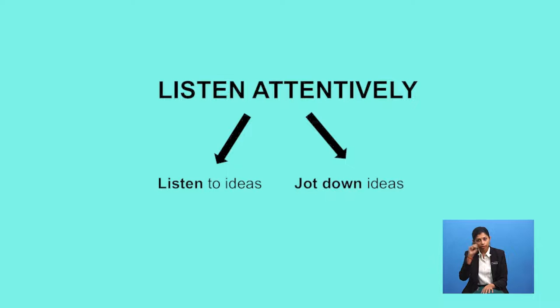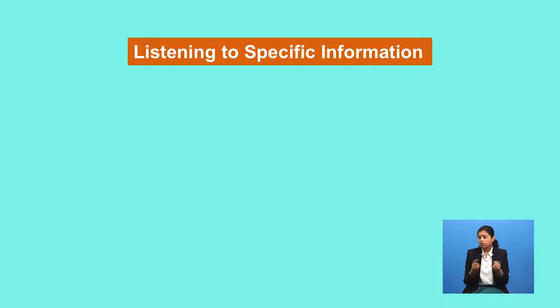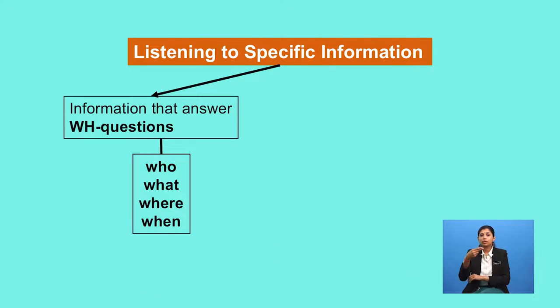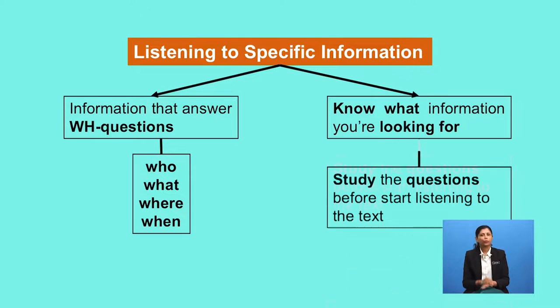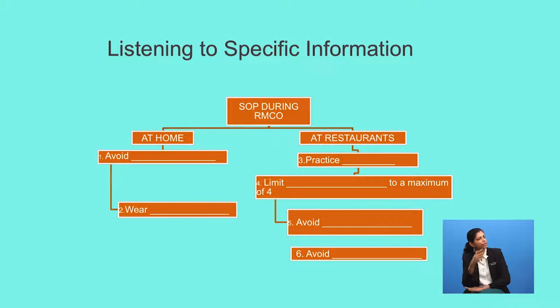Listen to the ideas rather than individual words, and jot down those ideas. Another important skill is listening for specific information — listening for details of a particular piece of information, very much like a tourist on the LRT listening for the station he wants to get off at. Here, we need to listen for information that answers the basic WH questions: who, what, where, and when. You need to know what information you're looking for, which means you need to study the questions before you even start listening to the text.